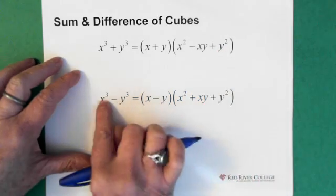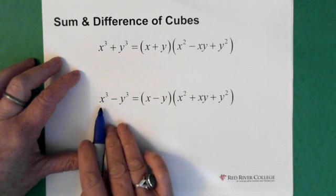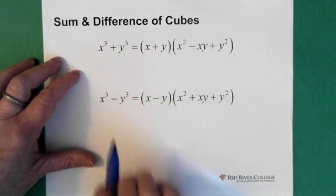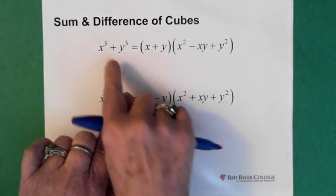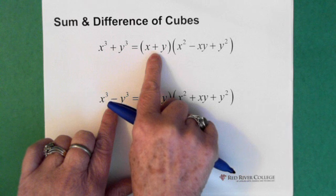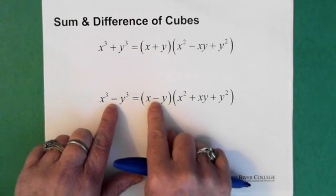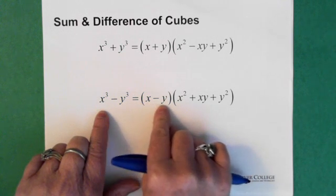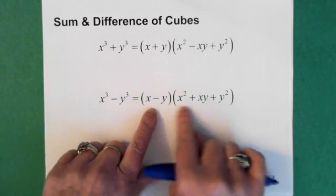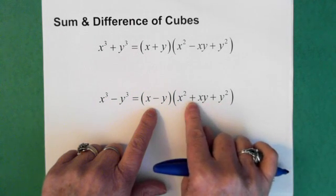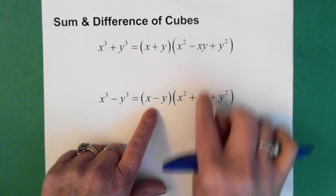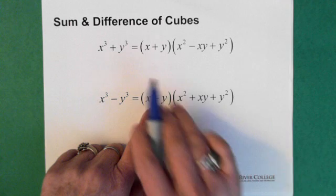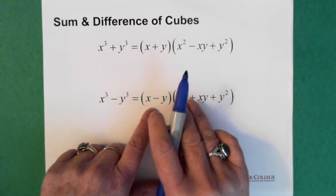And if we have the difference of cubes — something cubed minus something cubed — it's virtually identical except notice here we have plus and plus, whereas here we have minus and minus. So x cubed minus y cubed gives us x minus y, and in the second bracket this negative becomes a positive.